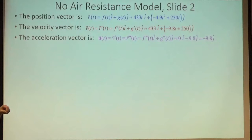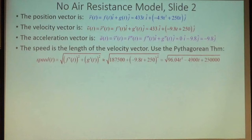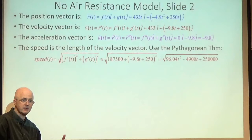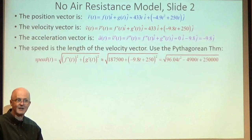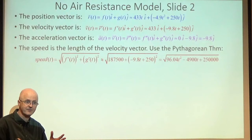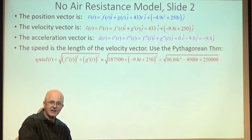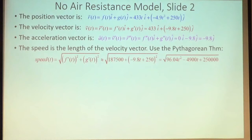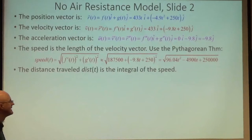The speed is the length of the velocity vector using the Pythagorean theorem: speed = √(f′² + g′²). You should know this formula, be able to plug in values of t, graph it, and maximize or minimize it — probably by taking the derivative of its square to avoid square roots — then find the max by plugging critical points or endpoints into the speed function. The distance traveled is the integral of the speed.